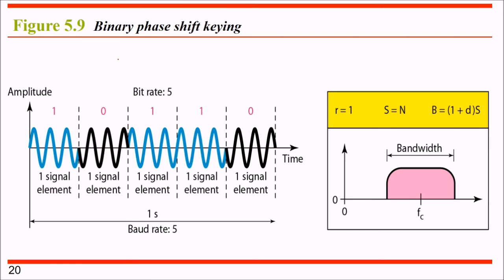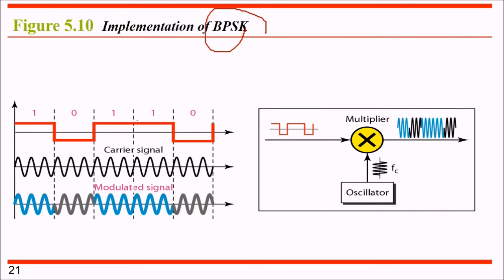Binary phase shift keying (BPSK) changes the phase of the carrier signal instead of amplitude or frequency. When the signal changes from 1 to 0 or 0 to 1, the phase shifts. The formula is again R equals 1, S equals N, and B equals (1 plus D) times S, with a bit rate of 5. To implement BPSK, we use an oscillator multiplied with the digital signal, ensuring the phase changes at every bit transition.